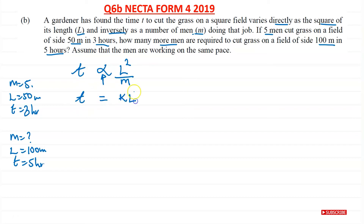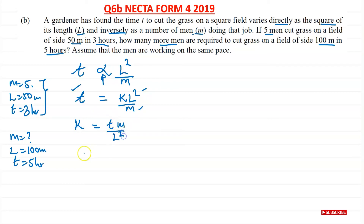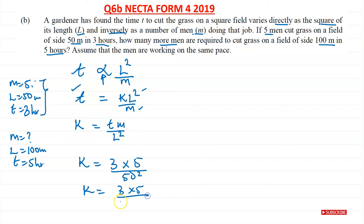In order to work with this, we need to remove the proportionality symbol and introduce a constant of proportionality. So t is going to be equal to k l squared over m. We don't know what k is, but from the first lot of information we have t, l, and m, so we can find k. Making k the subject: k equals t times m over l squared. Putting the values in: k equals 3 times 5 over 50 squared, which is 2,500. Simplifying gives k equal to 3 over 500.